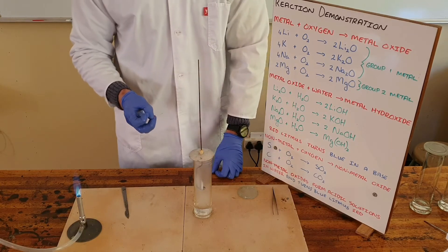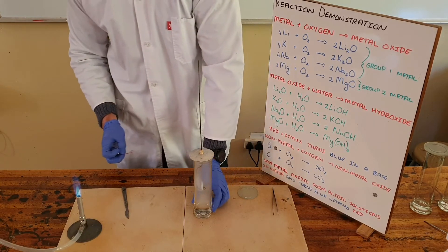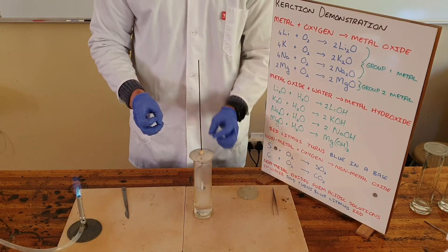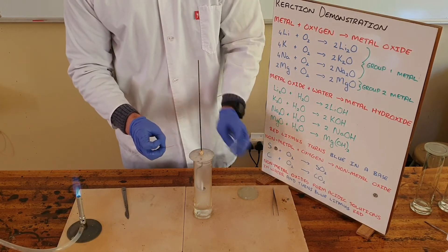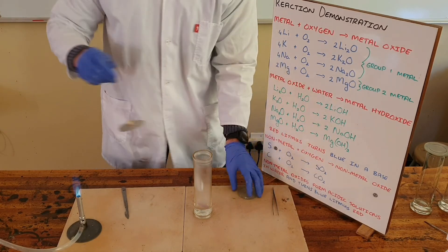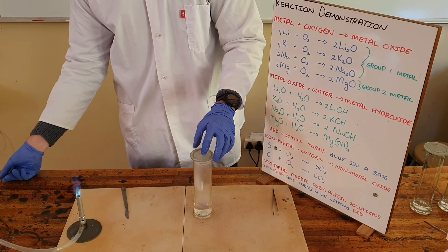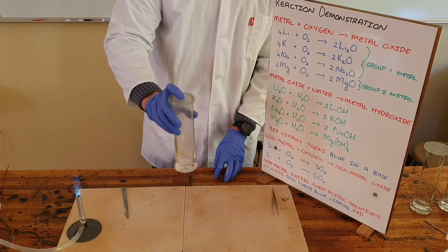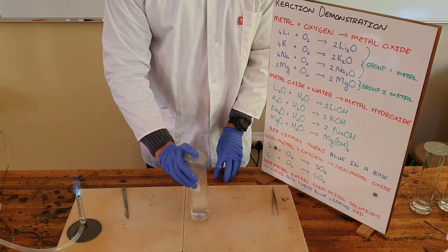So what's happened here is we have formed a certain amount of lithium oxide. Some of that lithium oxide has combined with the water that is present in the bottom of this gas jar. And what we can see now is that when we place the litmus paper in that water, we've got an alkaline solution. We can see that the red litmus paper turns blue almost instantaneously.